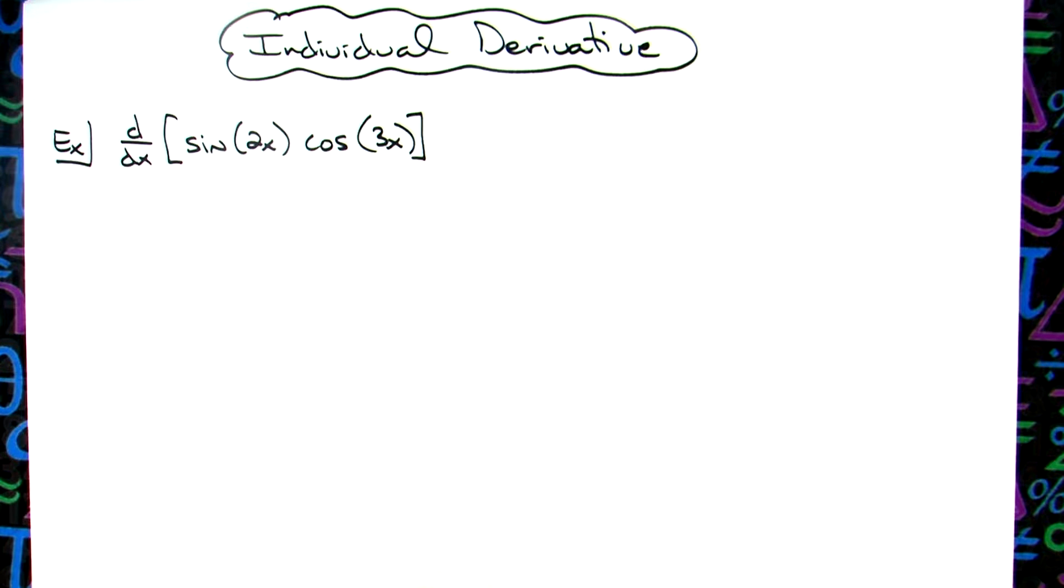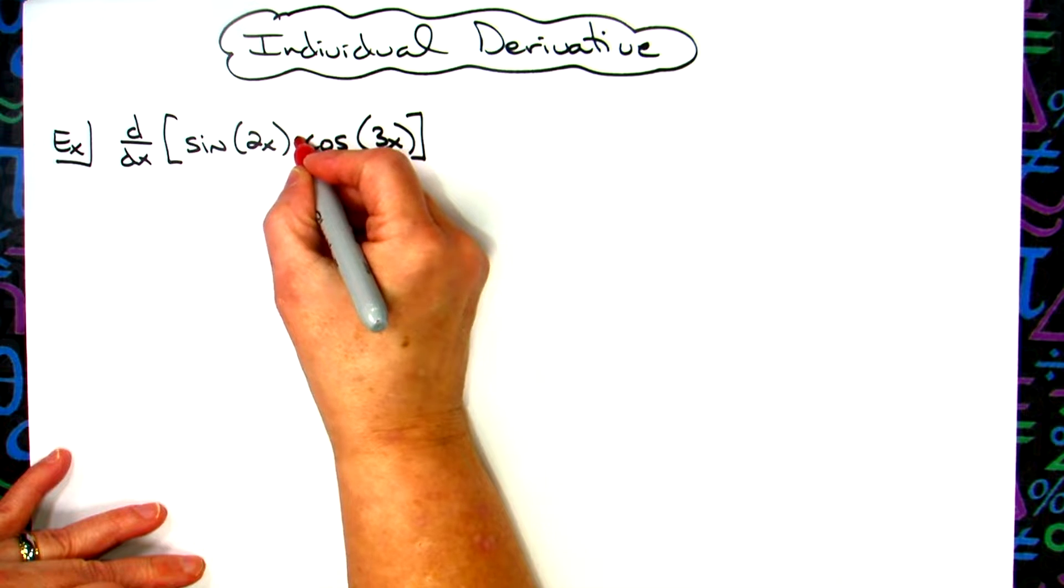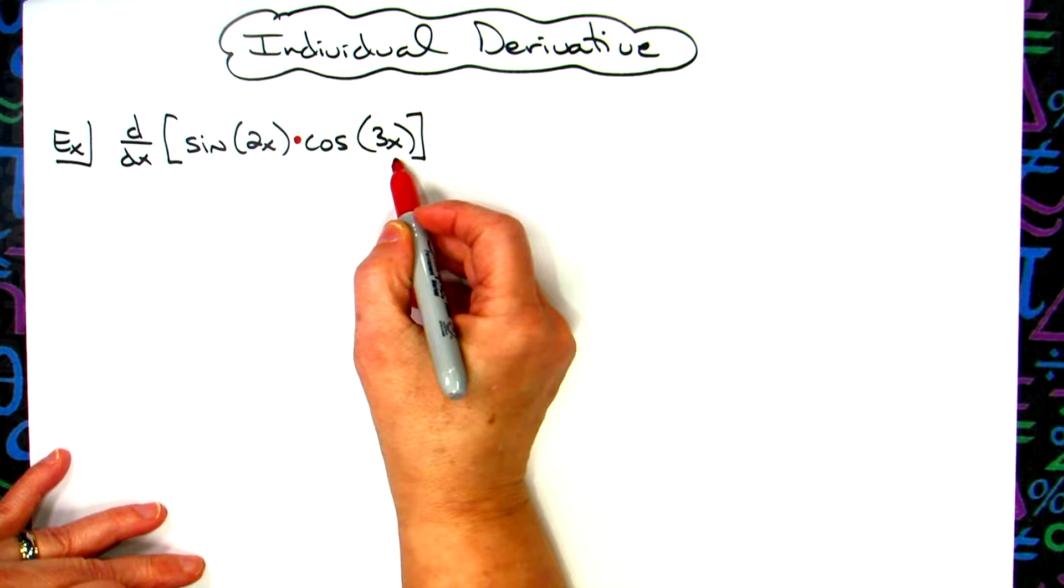All right, in this video we're going to take a look at an individual derivative. It is going to include a product - the product rule - because I've got sine of 2x here times the cosine of 3x, so I am going to use product rule.